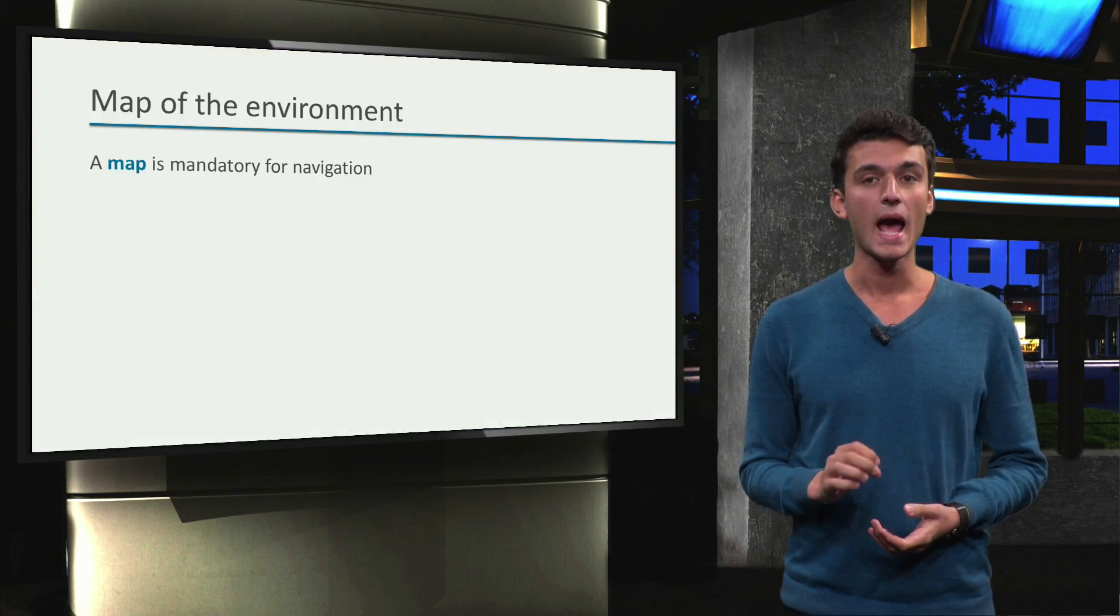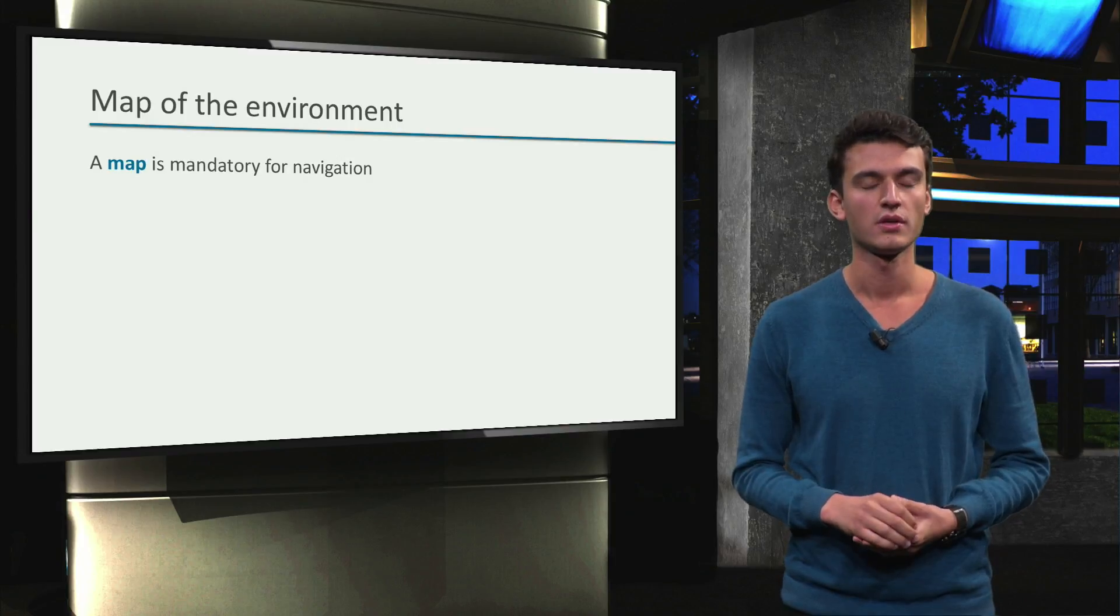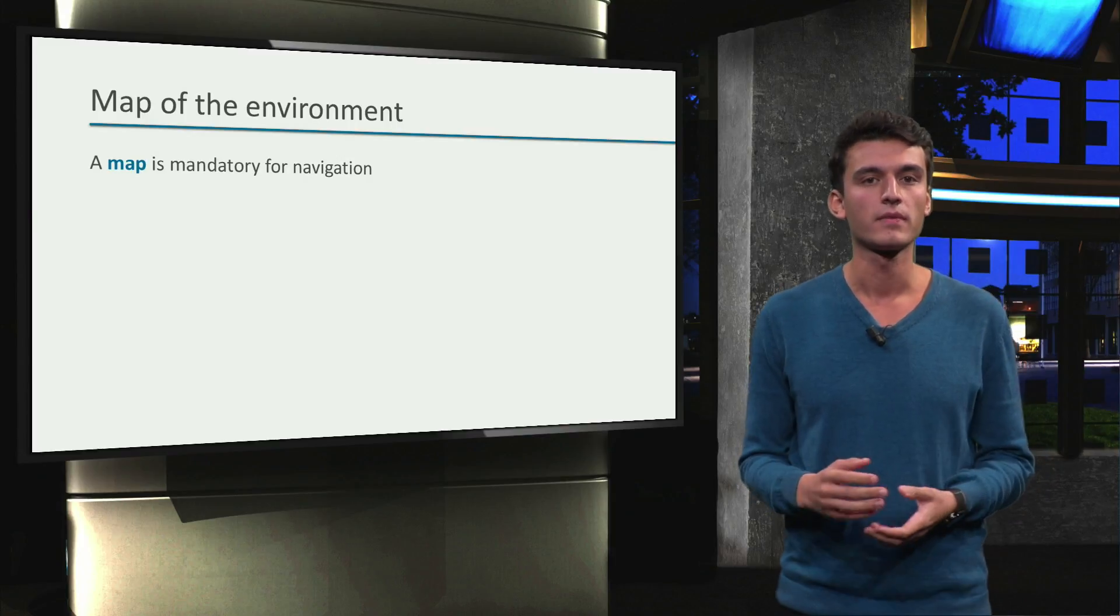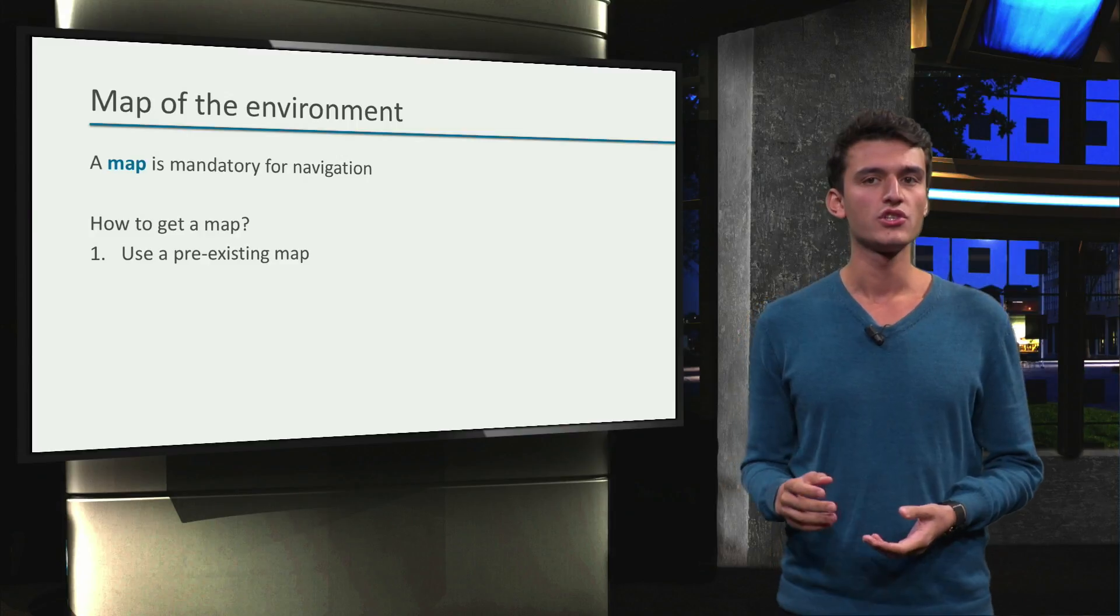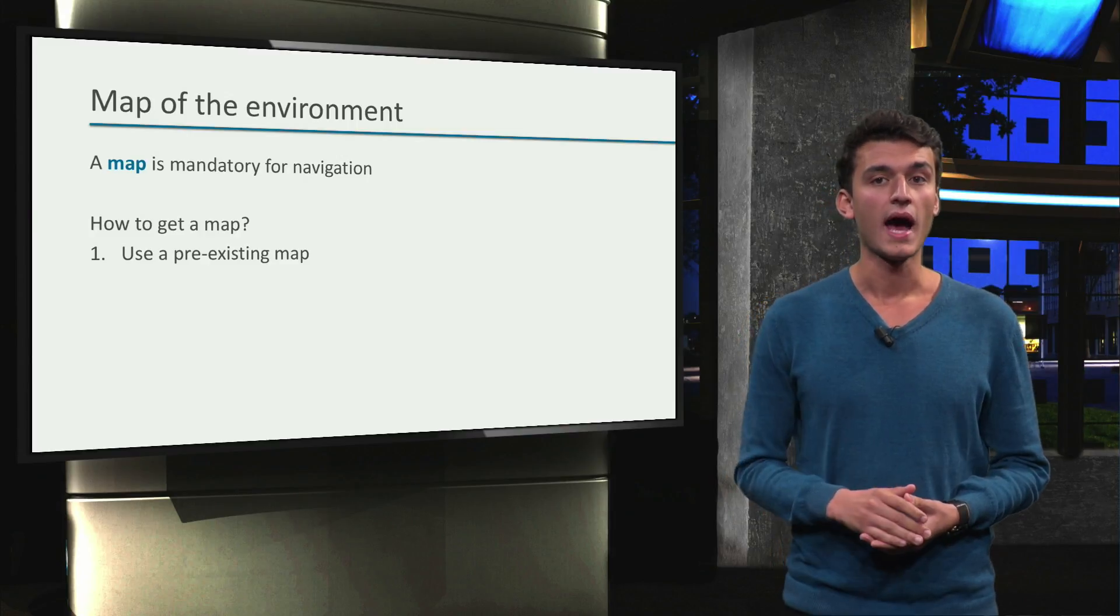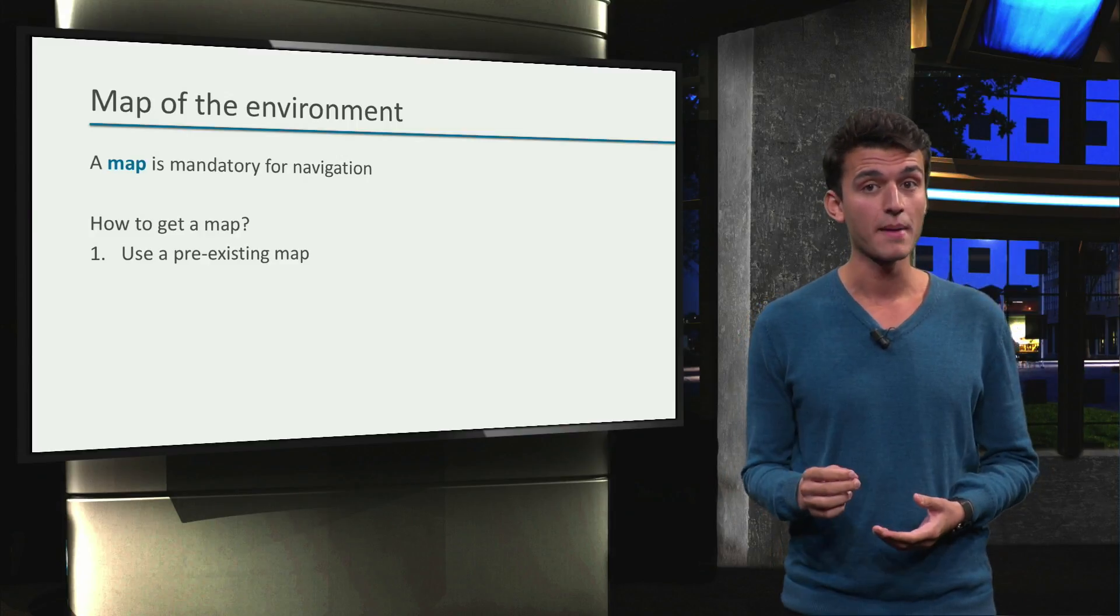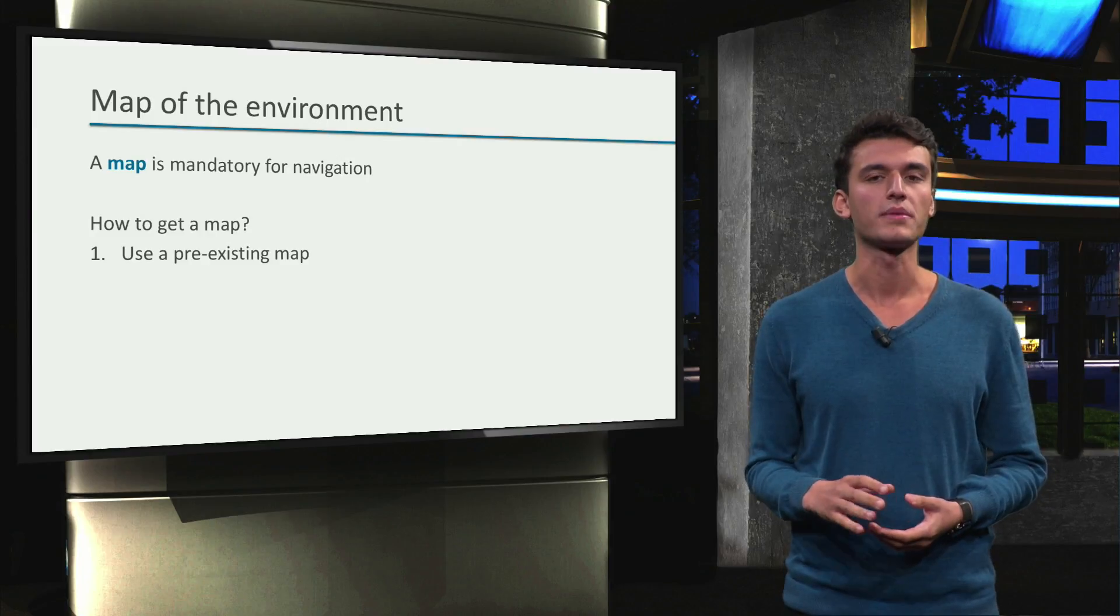As we have seen, a map is absolutely mandatory for navigation. But how do we get a map? In some cases, we can just use a pre-existing map. However, there are different types of maps and it's not always suitable for our application.